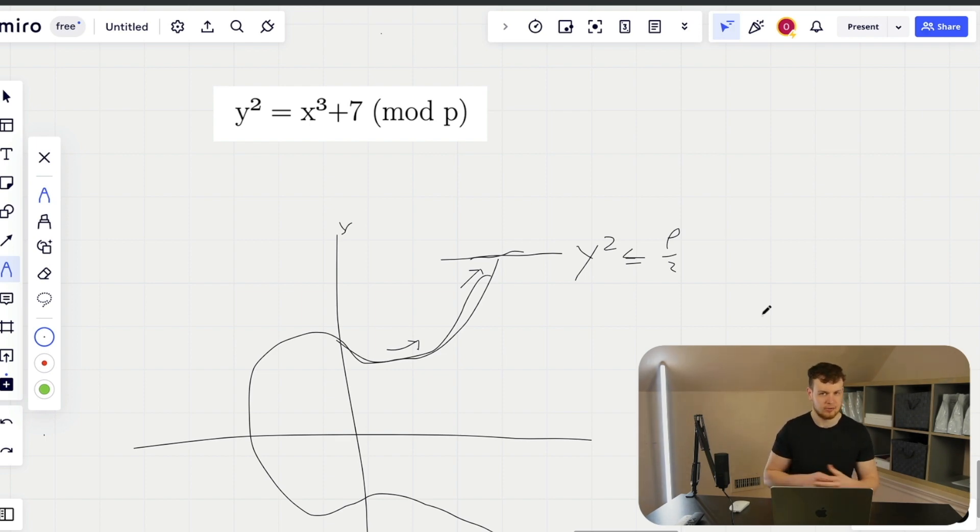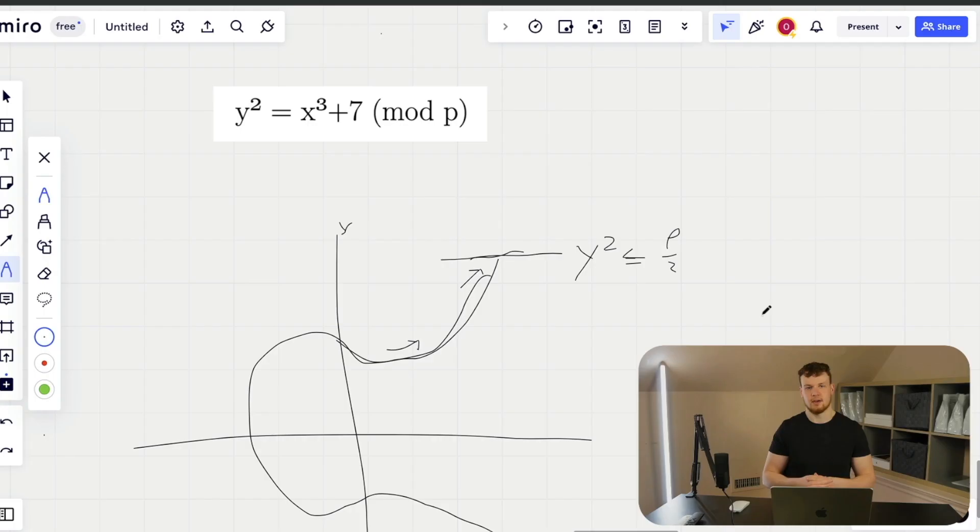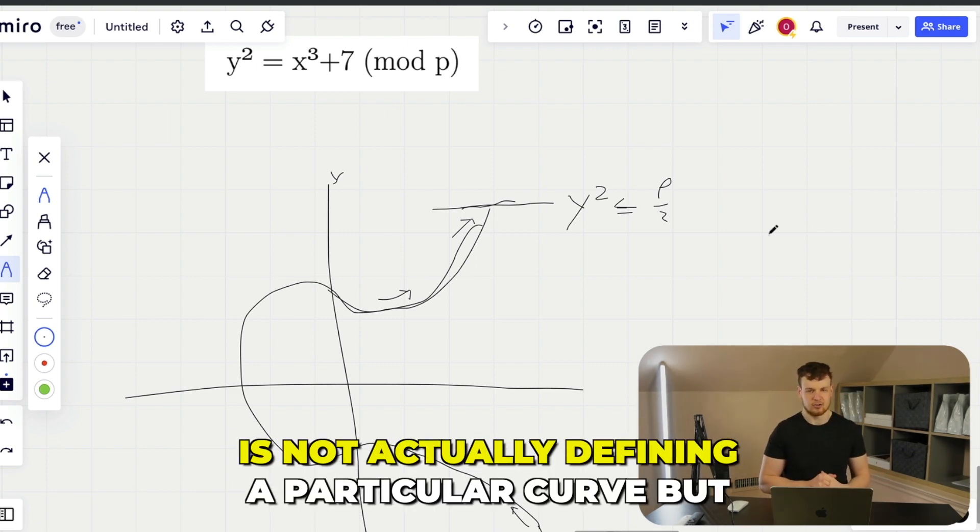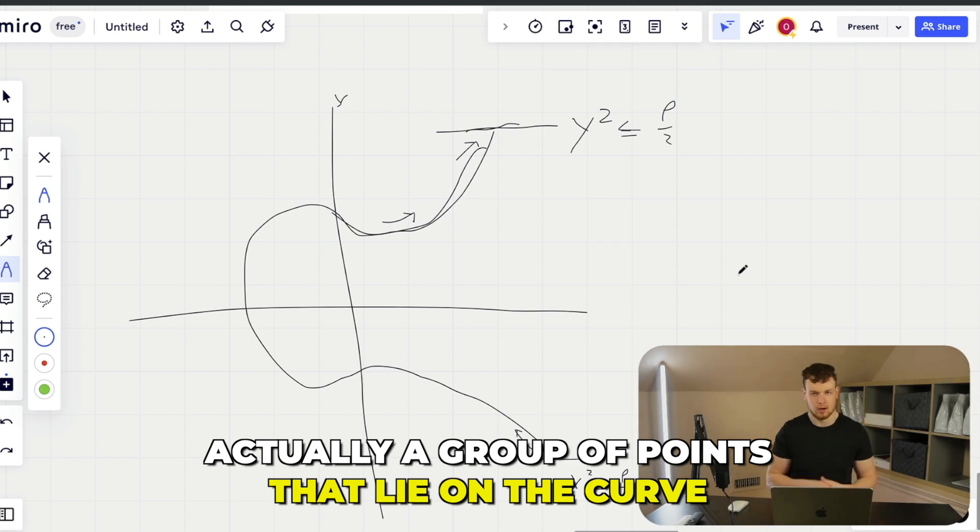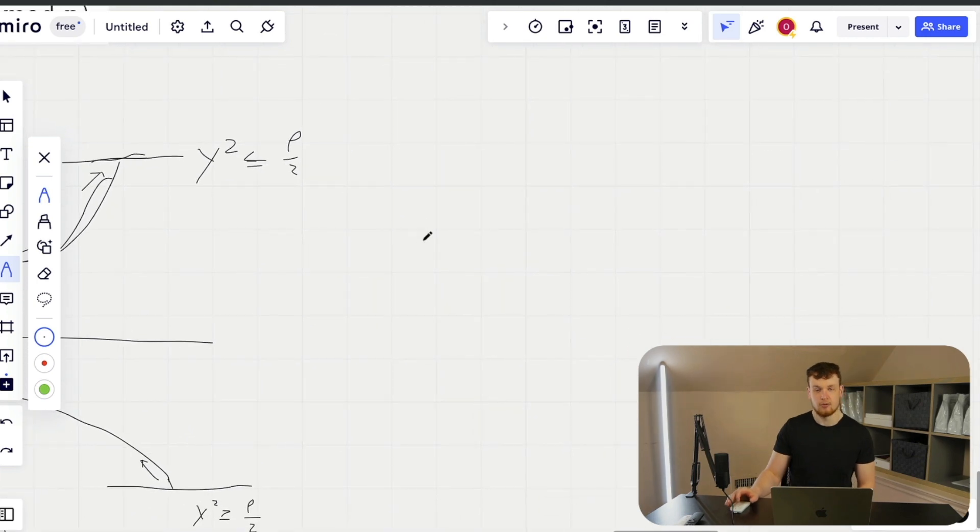There are also some other characteristic values of secp256k1 that are important to understand. And to basically describe these values, we're going to go very briefly into some high level group theory. Don't worry, I'm going to explain this as simply as I possibly can in the way that I understand it. But first thing to understand is that secp256k1 is not actually defining a particular curve per se, but actually a group of points that lie on the curve.